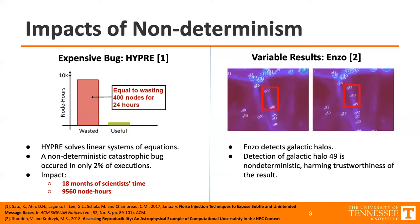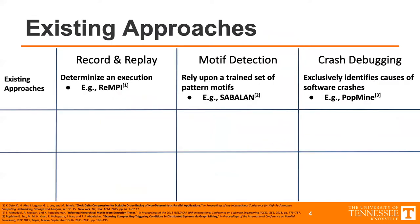Of course, with such a large problem, there are already approaches in the field to deal with this. One is record and replay, which records execution and then can run it the same way again — a tool you might know of that does this is Rempy. Another method is motif detection. We have a pretty good idea of classic ways that non-determinism manifests, so tools like Sabalon document all these ways and when run on an application, will detect where that sort of repeated problem is. And then there's crash debugging with debuggers, some even specialized for specific problems like PopMine, which finds the cause of a non-deterministic software crash.